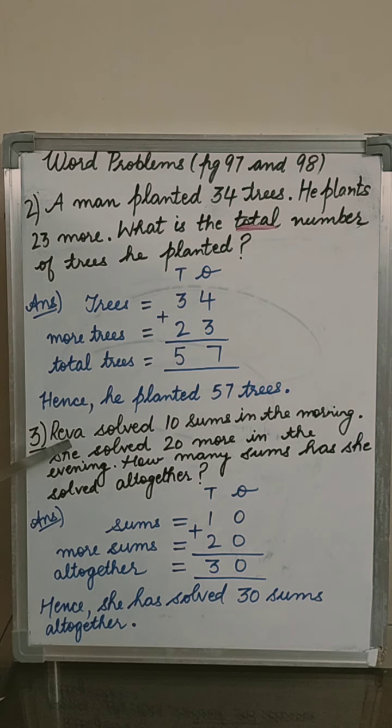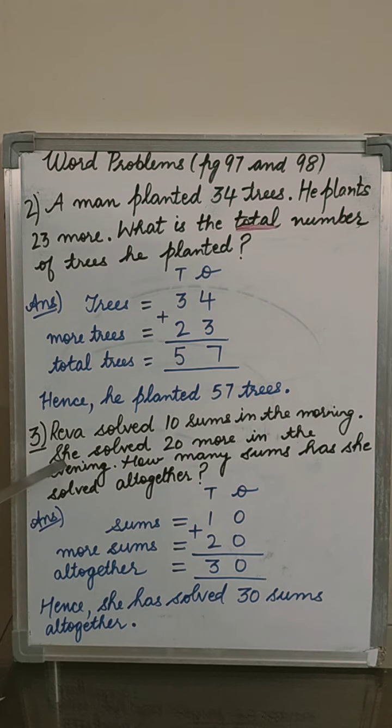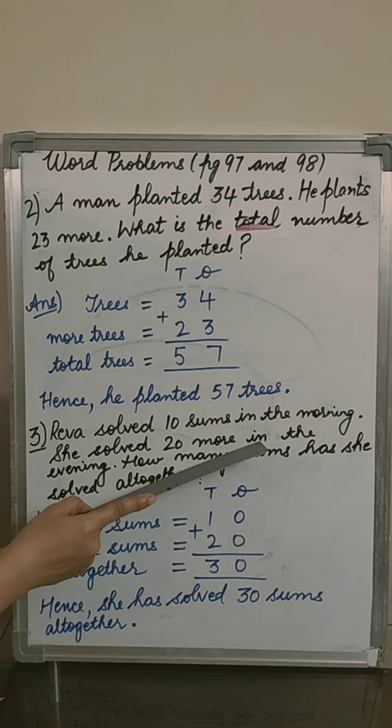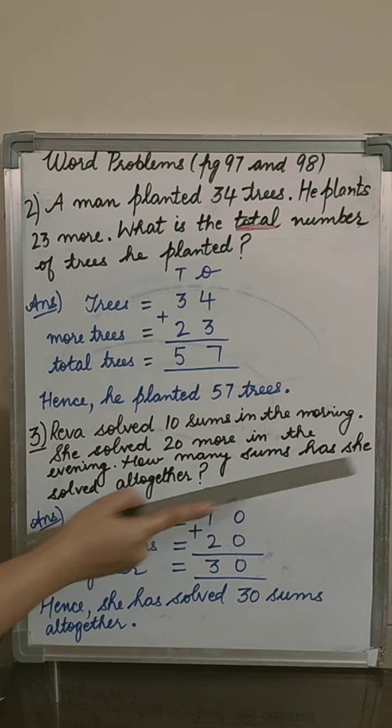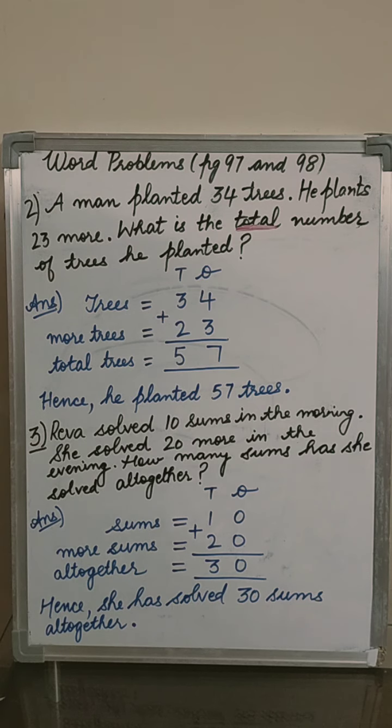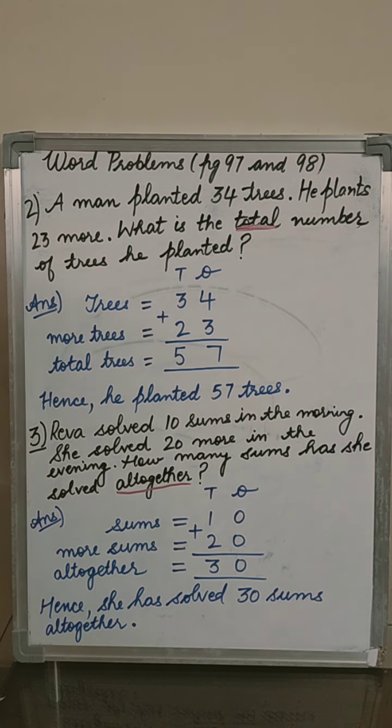Next question, number 3. Reva solved 10 sums in the morning. She solved 20 more sums in the evening. How many sums has she solved altogether? The keyword is altogether. Altogether means plus.